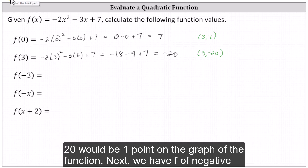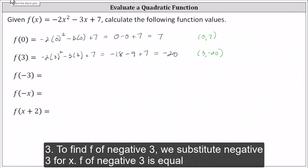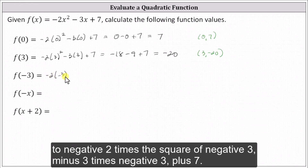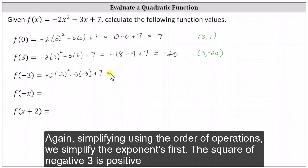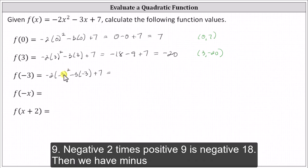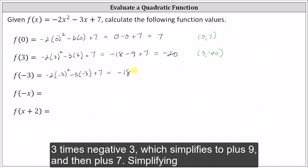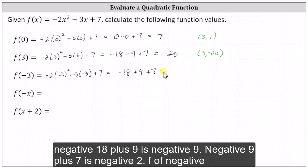Next, we have f of negative three. To find f of negative three, we substitute negative three for x. f of negative three is equal to negative two times the square of negative three, minus three times negative three plus seven. Simplifying using the order of operations, we simplify the exponents first. The square of negative three is positive nine. Negative two times positive nine is negative 18. Then we have minus three times negative three, which simplifies to plus nine, and then plus seven. Simplifying, negative 18 plus nine is negative nine.